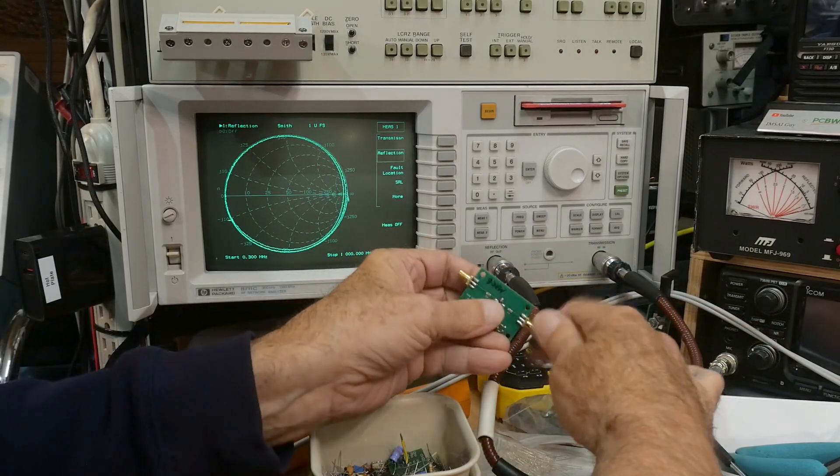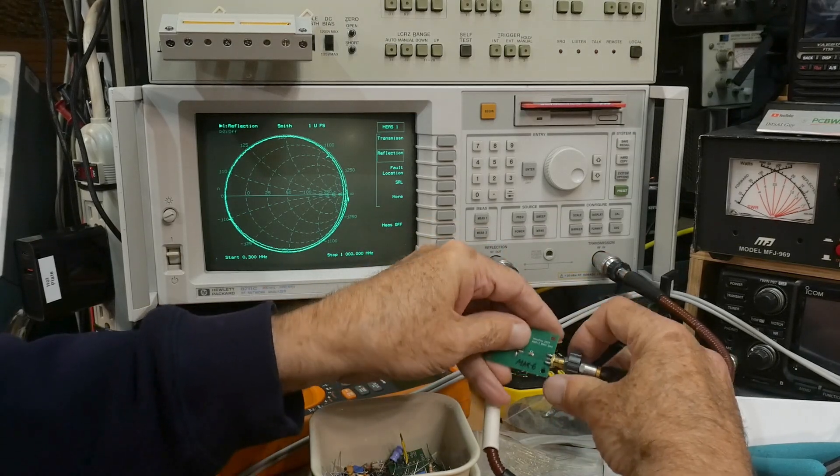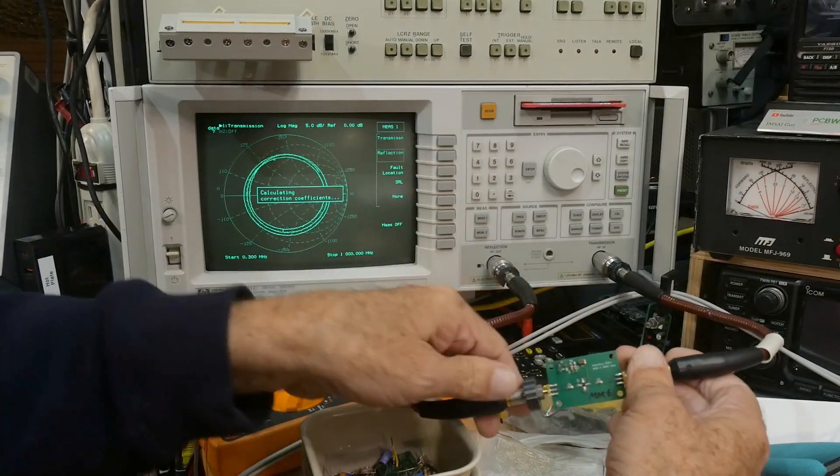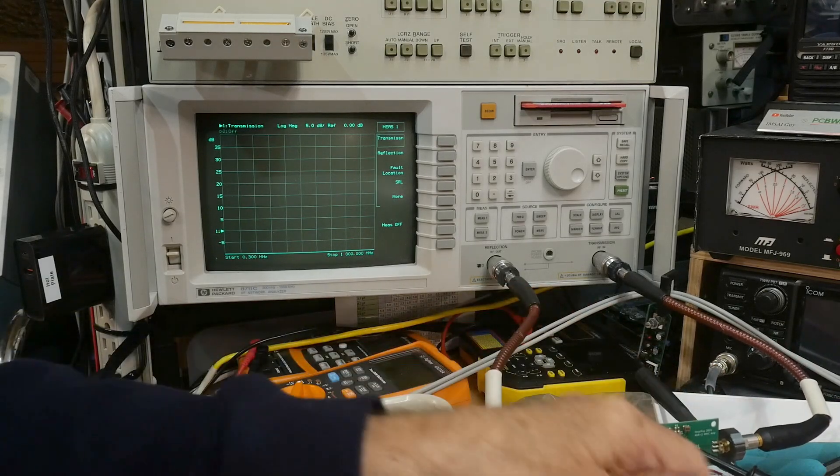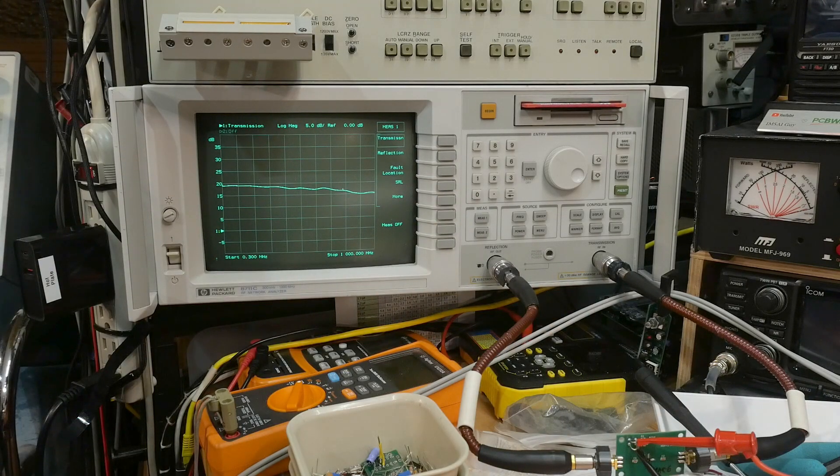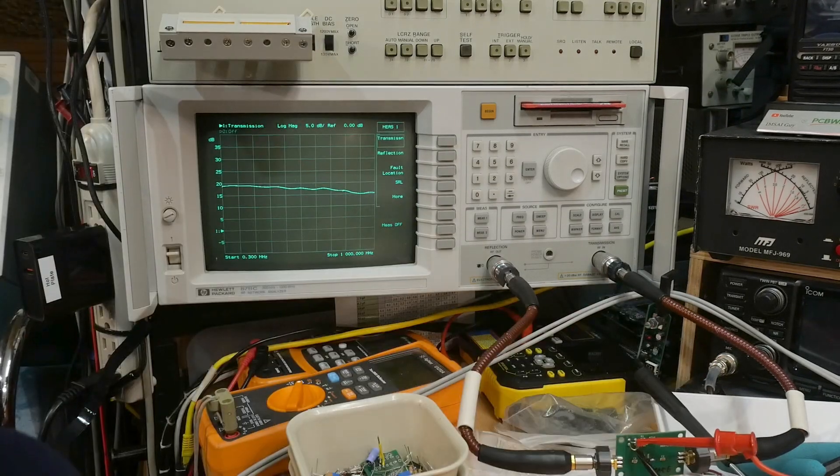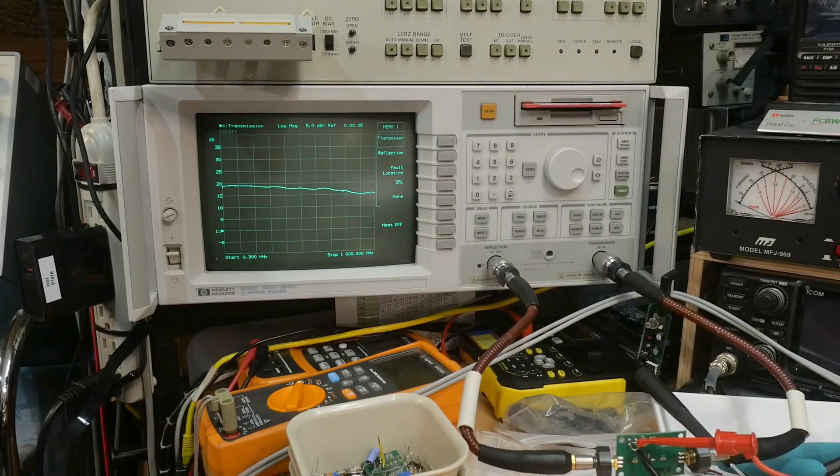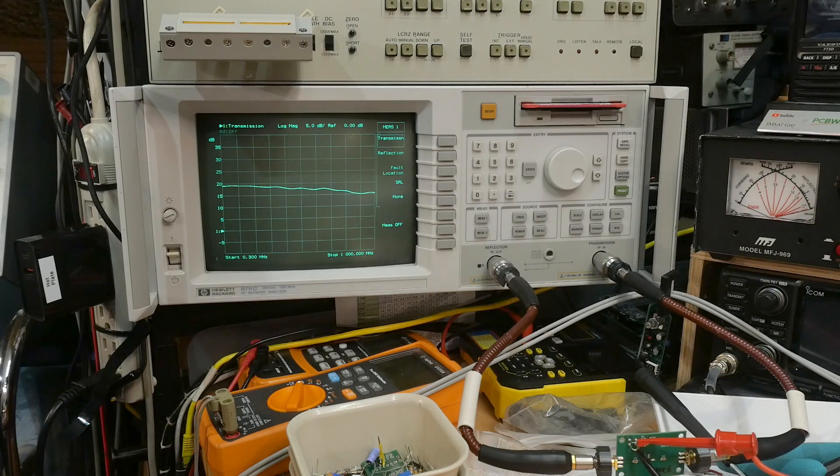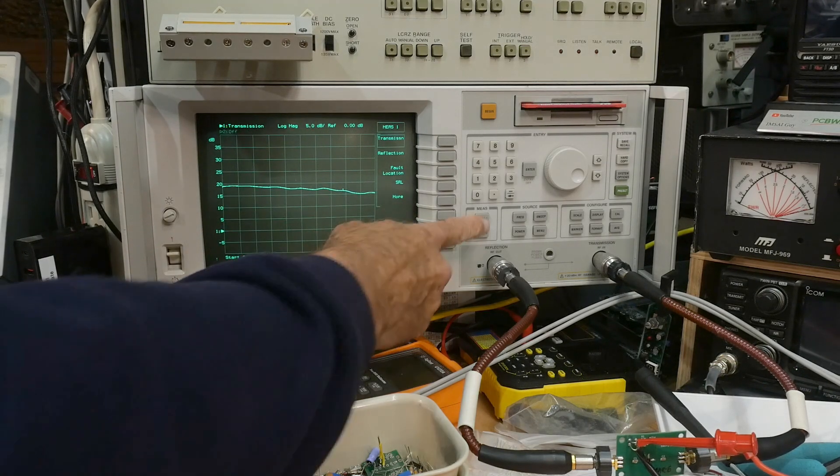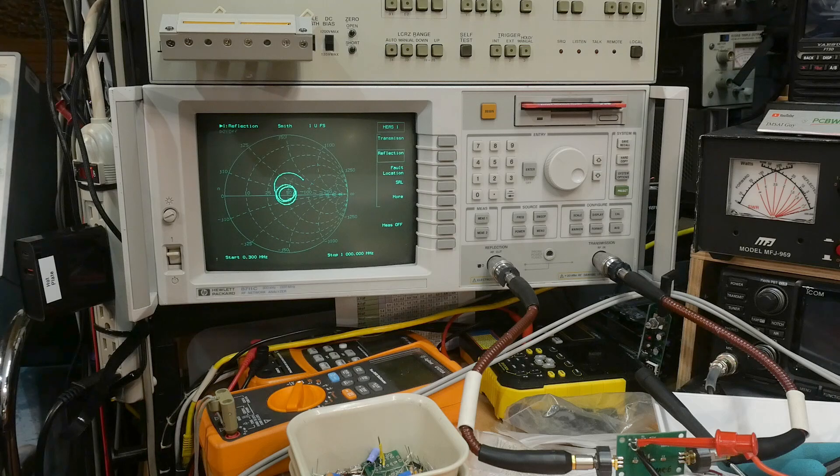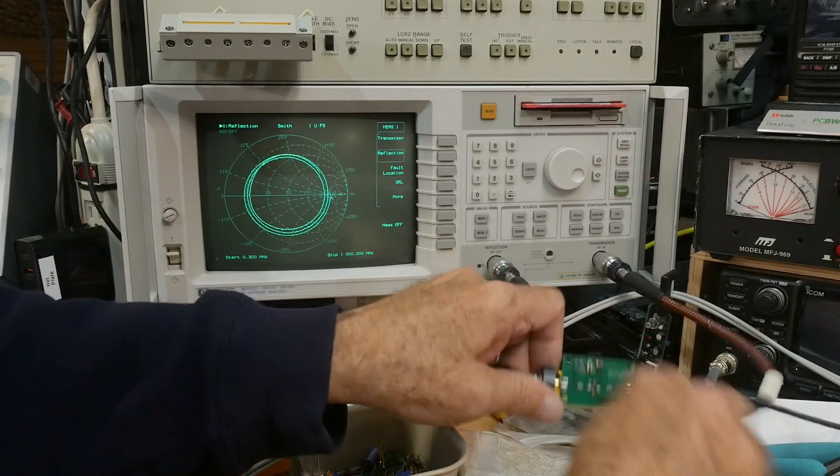So let's go to MAR-6. I'm hooking it up backwards. That wouldn't be good. Let's go back to transmission. Let's hook up power. And this one looks like it's got about 19 dB of gain. What's MAR-6 data sheet say? It says 21 dB. A little bit under. We're about 19, it's supposed to be 21, so this one's just a little bit under. What does its return loss look like? Very good, except for the very end. It's a lot like the MAR-1.